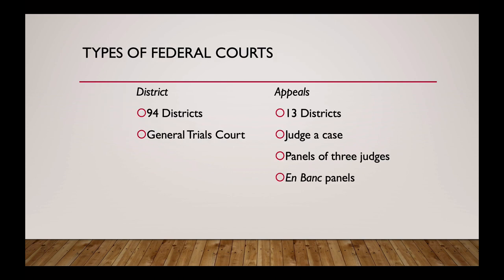There are two main types of federal courts: district courts and appeals courts. At the entry level are trial courts, where questions of fact are decided — witnesses testify and a judge determines what happened. In the federal system there are 94 districts; many states have more than one. For example, Ohio has two districts, and the federal court for the Southern District of Ohio is based here in Cincinnati.